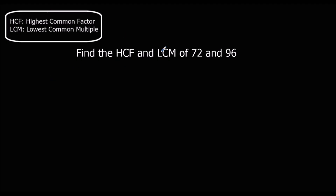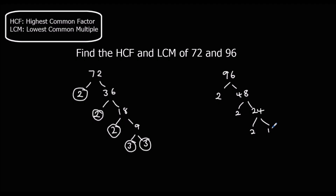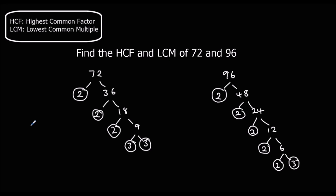The first step was to break the two numbers down to products of their prime factors. So we had 72, which is 2 times 36; 36 is 2 times 18; 18 is 2 times 9; and 9 is 3 times 3. All of these are prime numbers — we can't break them down any more. So 72 written as a product of its prime factors is 2 times 2 times 2 times 3 times 3.